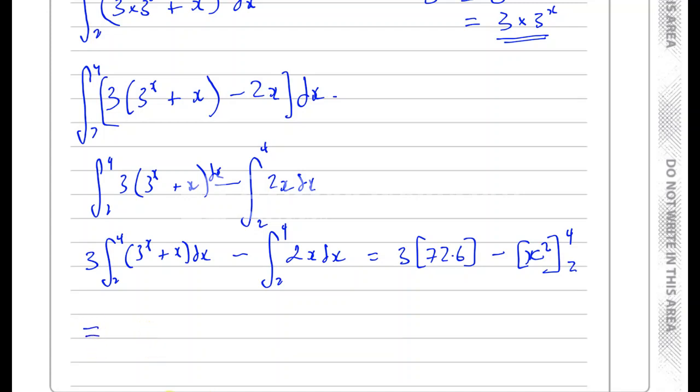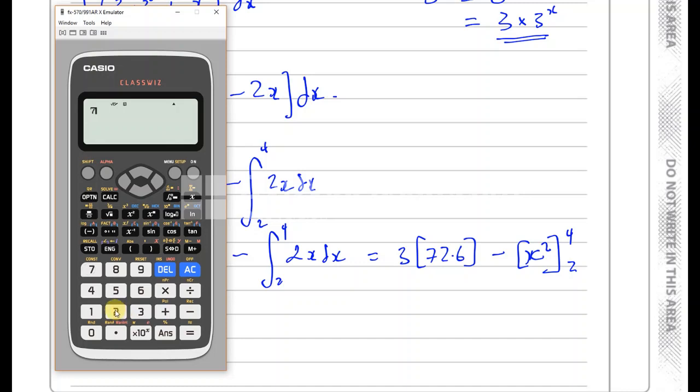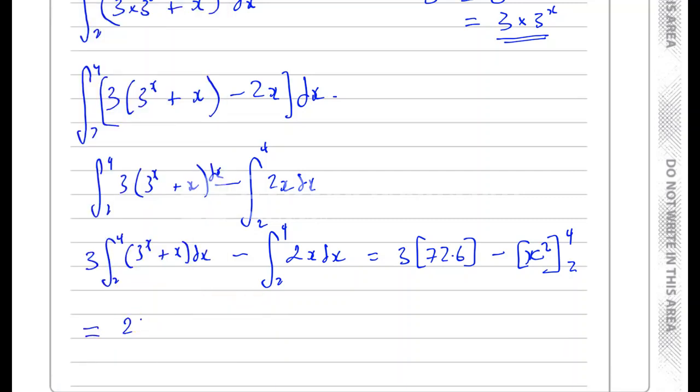That's going to give me 3 times 72.6, so 72.6 times 3, which gives you 217.8. And minus, I'm going to have to put 4 into there. So you're going to have 4 times 4 is 16, and I'll have minus 2 into there, which is 4. So that's going to be 217.8 minus 12, which is 205.8. And that is the answer to part C.